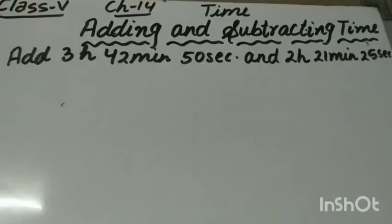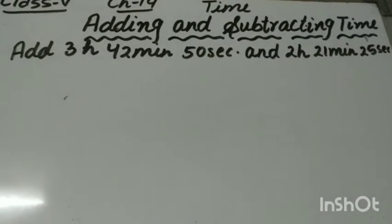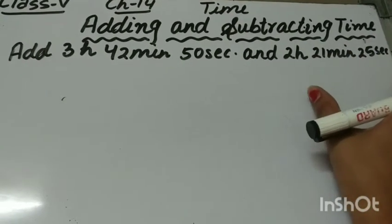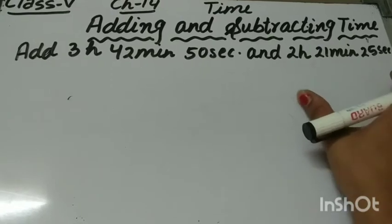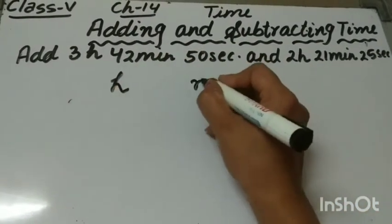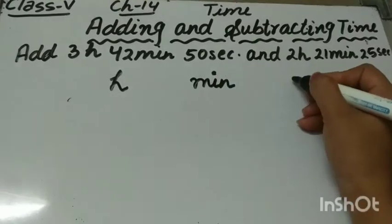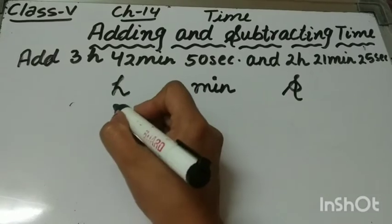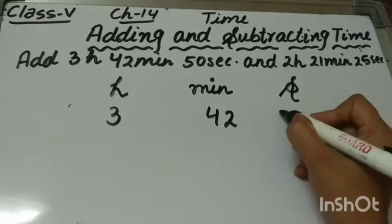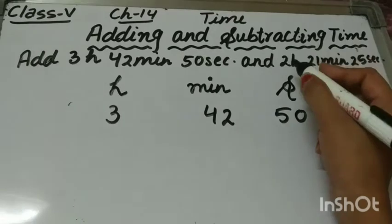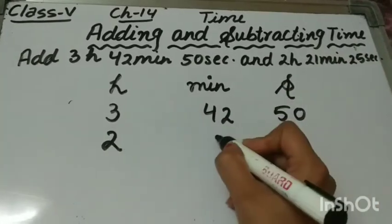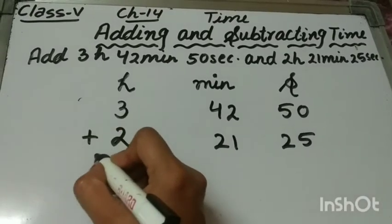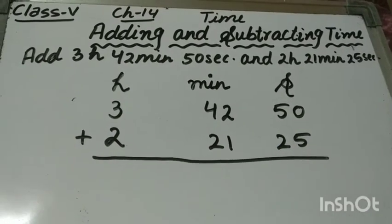Let me explain with an example. If we have to add 3 hours, 42 minutes, 50 seconds and 2 hours, 21 minutes, 25 seconds, then first we write H, min, and sec. The hours in the first part are 3 hours, 42 minutes and 50 seconds, and in the second part, it's 2 hours, 21 minutes and 25 seconds. We add hours, minutes and seconds separately.